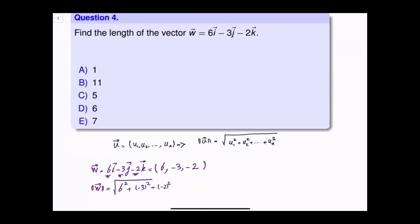squared is -3 times -3, which gives me 9. And (-2)² is -2 times -2, which is 4. And that will give me 36 + 9 + 4 = 49.